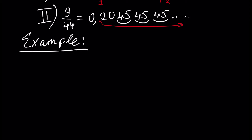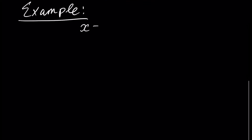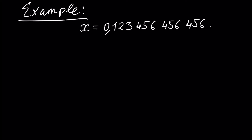Let's learn how to write the rational representation of a number when we know its decimal representation. For example, we have a number x which is equal to 0.123456456456 and so on. Assume 456 is the period in its decimal representation. Let's write the rational representation of this number.